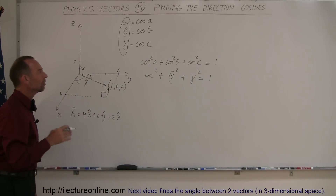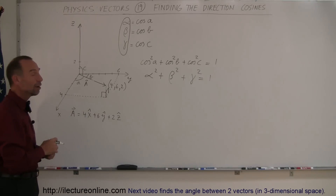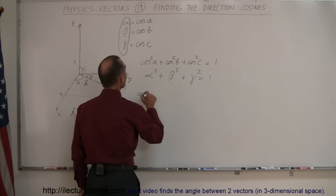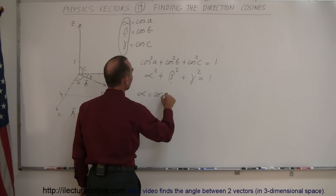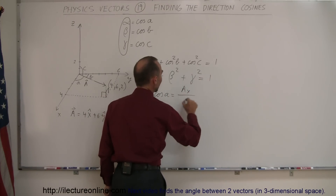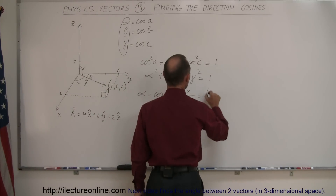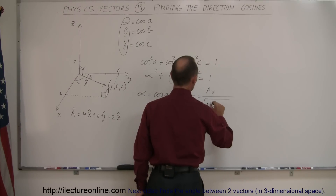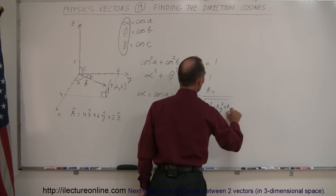So then the question is, how do you find those direction cosines? How do you find the cosine of A, the cosine of B, and the cosine of C for any vector? It turns out that the direction cosine alpha is equal to the cosine of A, which equals the magnitude of the x-component of vector A divided by the magnitude of vector A. In other words, this equals A_x divided by the square root of A_x squared plus A_y squared plus A_z squared.